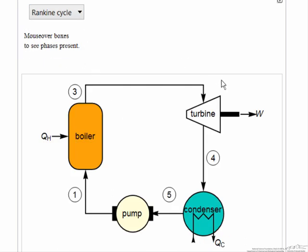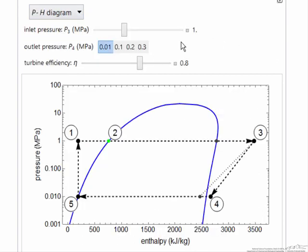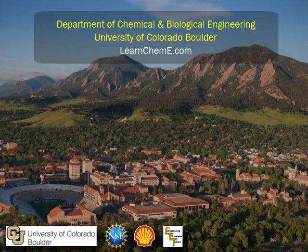And then this shows just the cycle, where again mousing over it shows what the conditions are at each point. So we can use this diagram to better understand the functioning of a Rankine cycle.